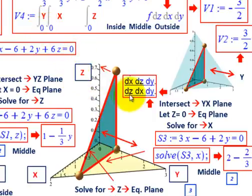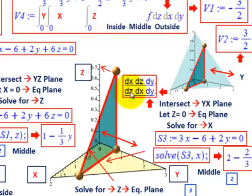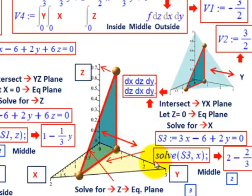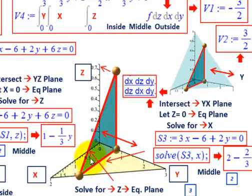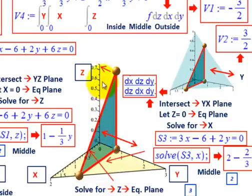For dz, dx, dy: dy is the outside integral, moving along the y-axis from 0 to 3. dx was the middle integral tied to the x, y plane — we solved for x by letting z equal 0. dz was the inside integral following the hypotenuse of the triangle, i.e., the tetrahedron face — found by solving for z in the equation plane, running from 0 to that equation.